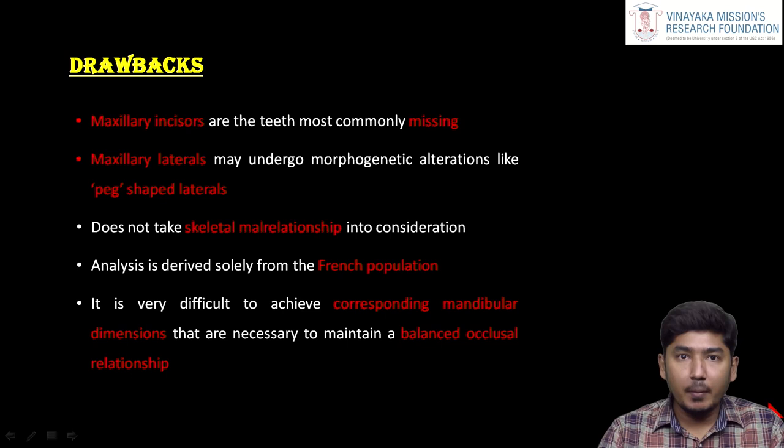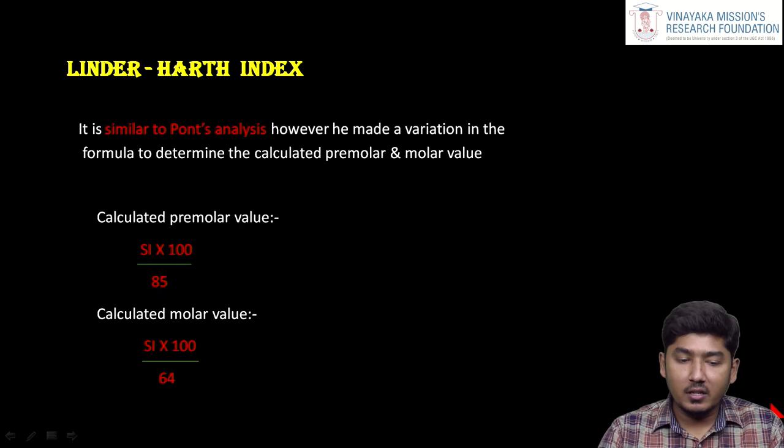It is very difficult to achieve the corresponding mandibular dimension, as mentioned earlier. For balanced occlusion, there should be a relation between the maxilla and mandible, but most analyses are done pertaining to the maxilla, not the mandible.